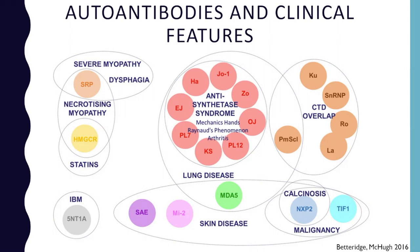I'm going to go into these individually, so don't be overwhelmed by this chart, but I do want to point out a couple of things. Malignancy — meaning cancer — is on here. That does not happen in kids, but does happen in adults, especially with the TIF-1 gamma autoantibody. Statin exposure is another thing that happens in adults and can preclude the HMGCR autoantibody, but that's not seen in children.